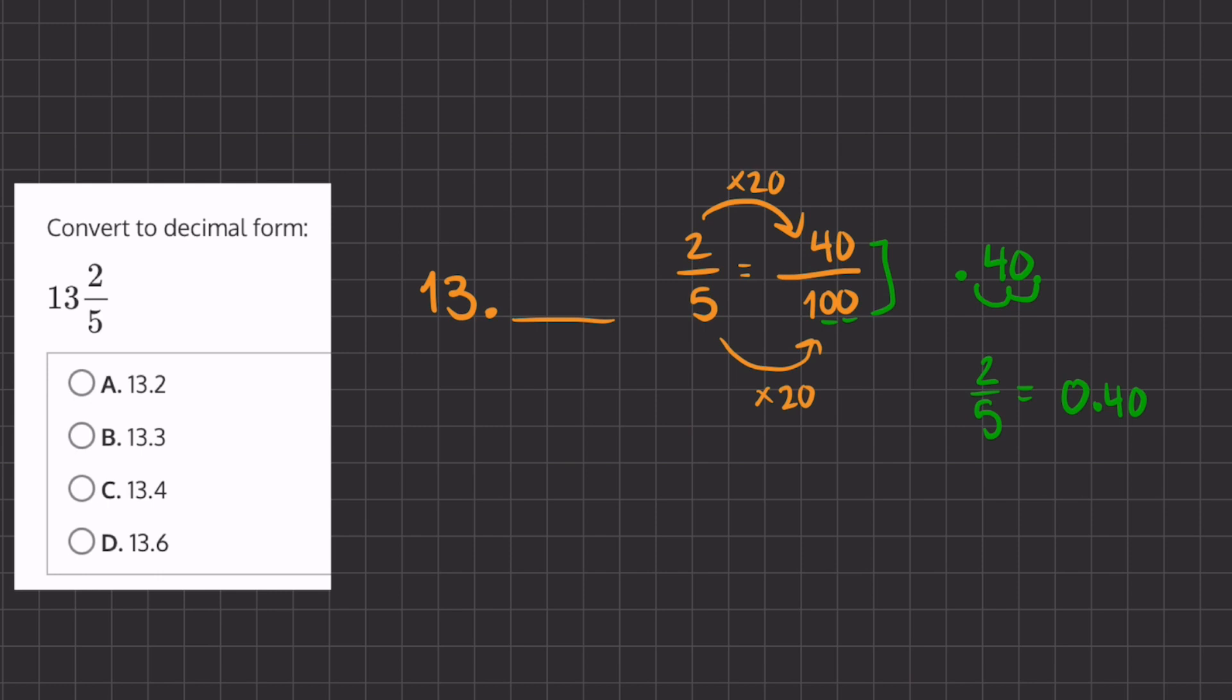Now we'll take this 13 and add the decimal to the 13, so it's going to give us 13.40. That will be our final answer, which is exactly equivalent to 13 and 2/5.